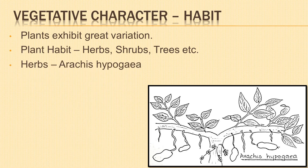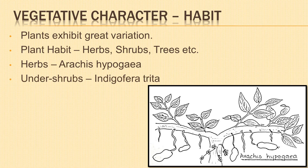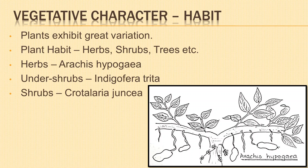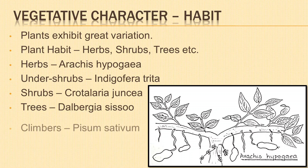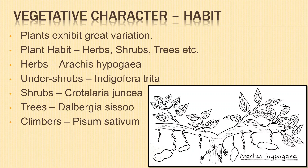Arachis hypogea and Scissor are examples of herbs. Crotillaria allata and Indigophera trita are examples of undershrubs. Cajanus cajun and Crotillaria juncia are examples of shrubs. Dalbergia siso and Sysbenia grandiflora are examples of trees. Pysum sativum and species of Dolikos are examples of climbers.